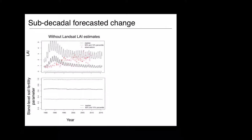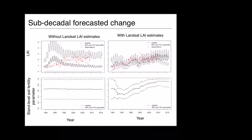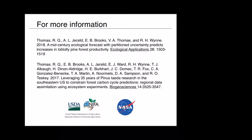The top panel shows what a prediction looks like without Landsat information — without knowing how productive the site was — with red as observations and black as the mean and confidence intervals around the forecast. When you start to assimilate Landsat LAI using an ensemble Kalman filter, it really helps constrain the site-level fertility parameter, which then allows you to adapt this forecasting framework for a particular location at a subject scale. More information is available in these publications, with funding from USDA and NASA.